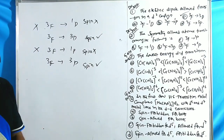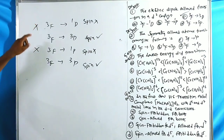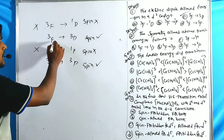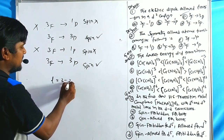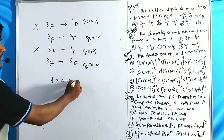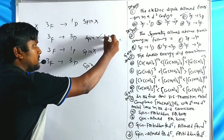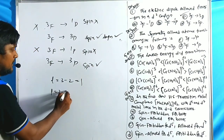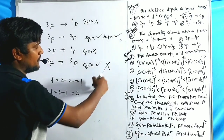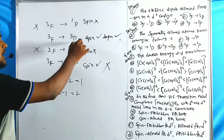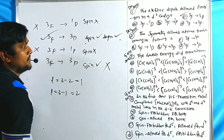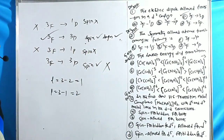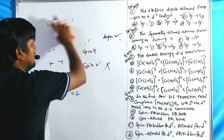For the remaining two spin-allowed options, applying Laporte: for option 2 (³F → ³D), ΔL = 3 − 2 = 1, which is Laporte allowed. For option 4 (³F → ³P), ΔL = 3 − 1 = 2, which is Laporte forbidden. Therefore option 2 (³F → ³D) is the correct answer — both spin and Laporte allowed.